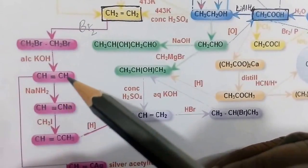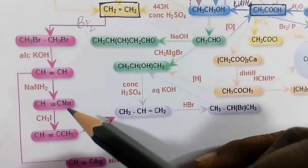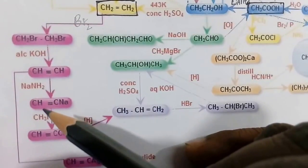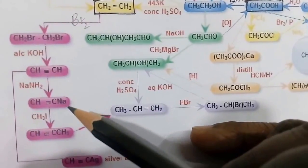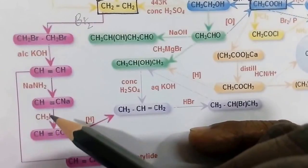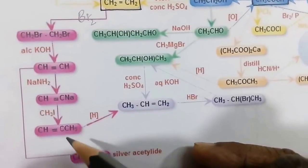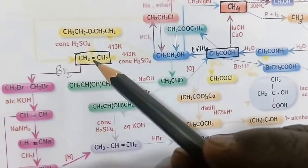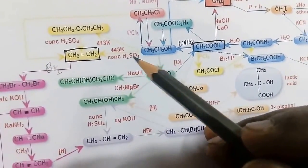Ethyne treated with sodamide in liquid ammonia: one acetylene hydrogen is replaced, giving sodium acetylide (monosodium acetylide). If more sodamide is used, both hydrogens are replaced giving disodium acetylide. The monosodium acetylide treated with methyl iodide — sodium and iodine are removed — gives propyne.